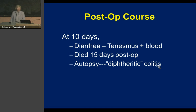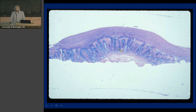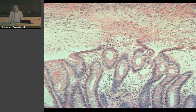At autopsy they described diphtheritic colitis. This is perhaps what they would have seen if they had been doing colonoscopy — either discrete pseudomembranes or confluent pseudomembranes. Histologically, it would have shown relatively normal preservation of colonic architecture but a thick pseudomembrane covering the mucosa, composed of fibrin and debris, attached to and erupting from the mucosa in what is called the summit or volcano lesion.